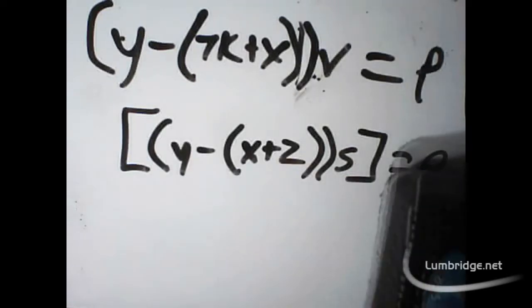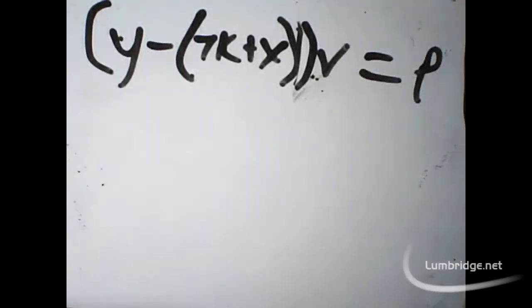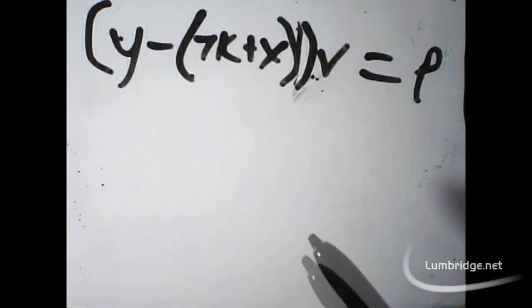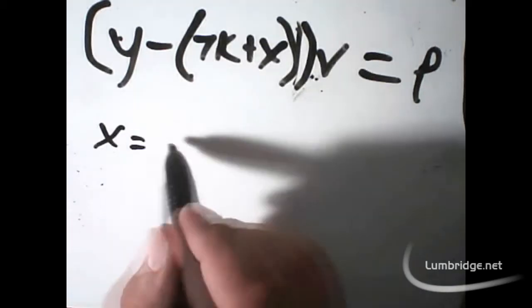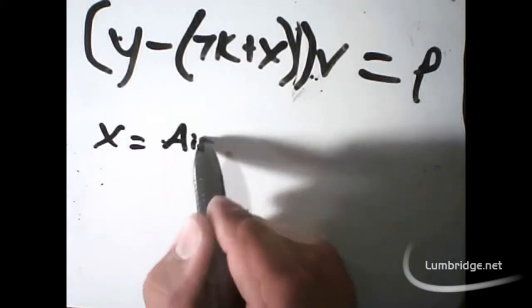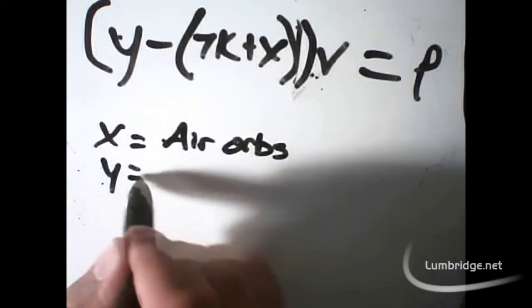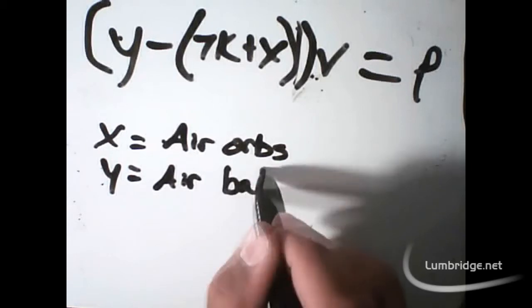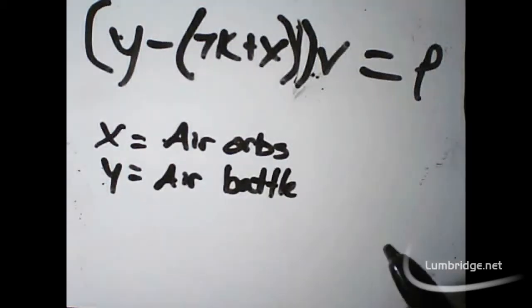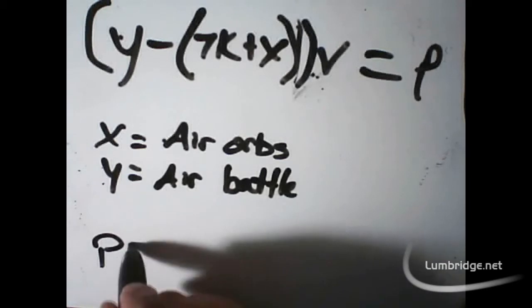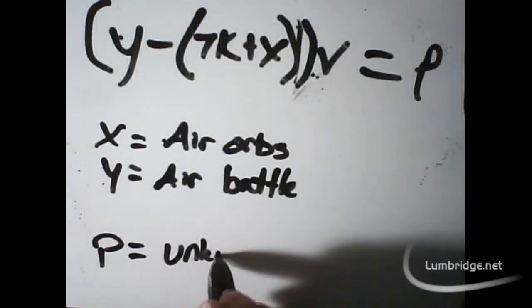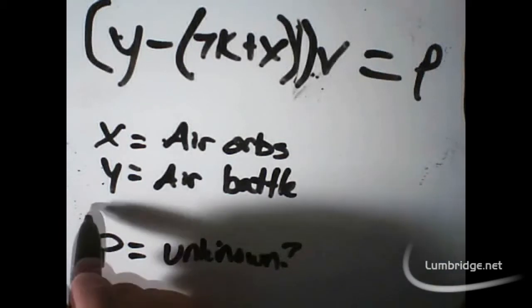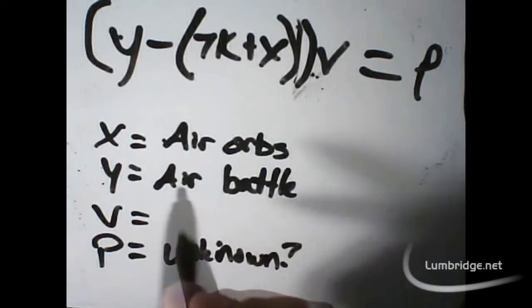Let's start with the first equation. And in algebra, you always have to define your variables. So, we're going to let it do that now. X is going to be the price of air orbs. Y is the price of air battle staffs. P is our unknown. We don't know what P is. And V is a variable for each of us.